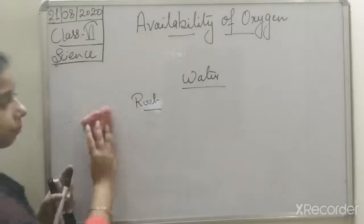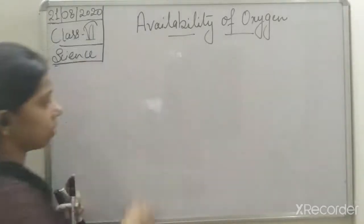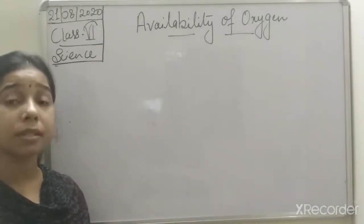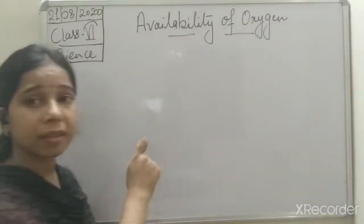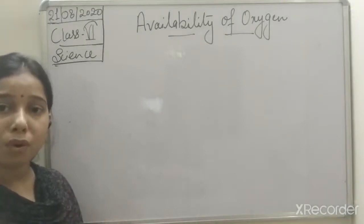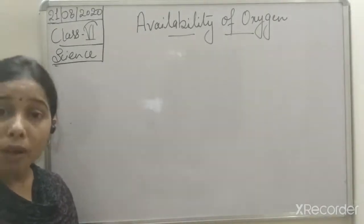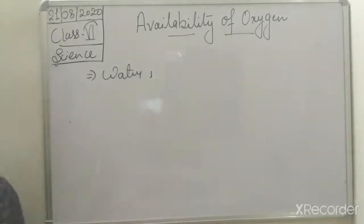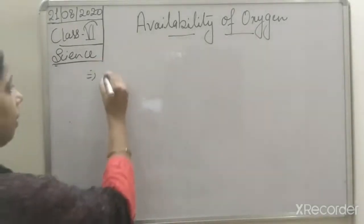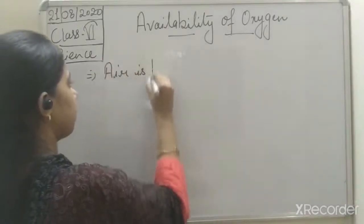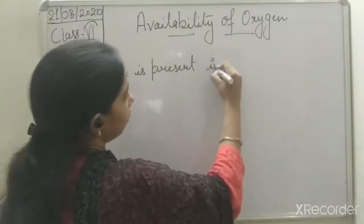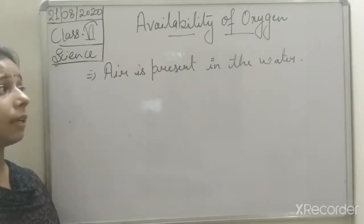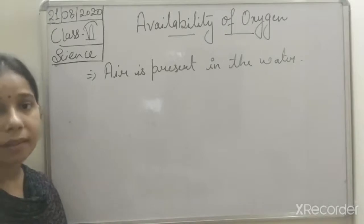Now we will discuss the availability of oxygen. Before that, in one of the activities we said that oxygen is a gas. When we talk about the availability of oxygen in water, it means air is present in the water. By this activity you can understand that air is present in water.